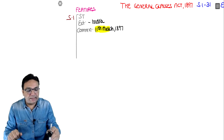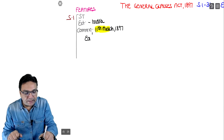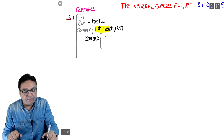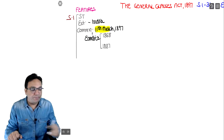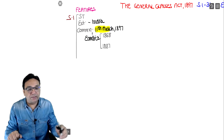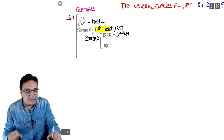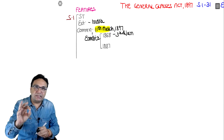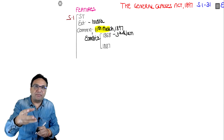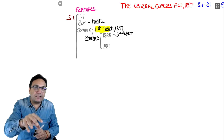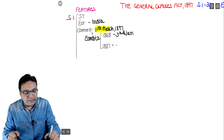So the utility of the General Clauses Act applies to acts made after it. But importantly, before this act came, there were two earlier GCAs - one came in 1868 and another in 1887, and then this 1897 one came. So many definitions in section 4 are used in many acts made after 1868.